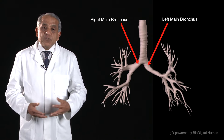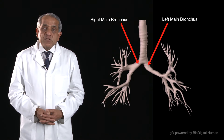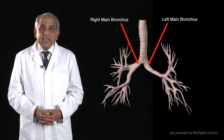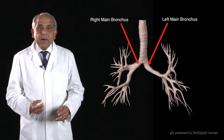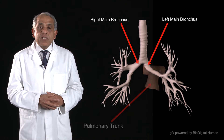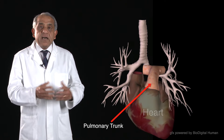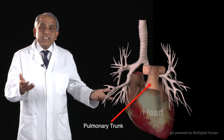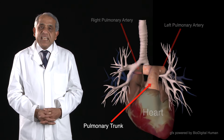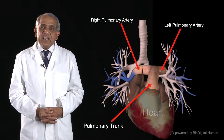Let me prove it to you. The trachea bifurcates into the right and left main bronchi, and the pulmonary trunk, which emerges from the fibrous pericardium, breaks up into the right and left pulmonary arteries.